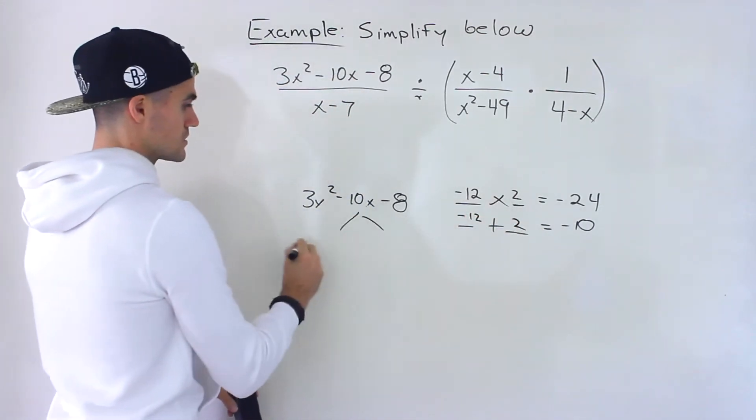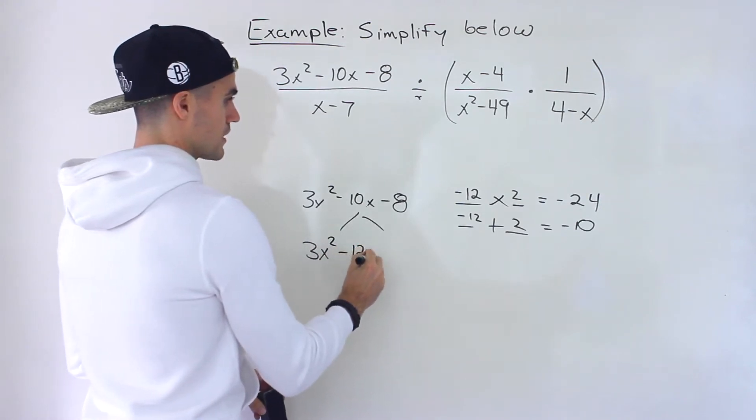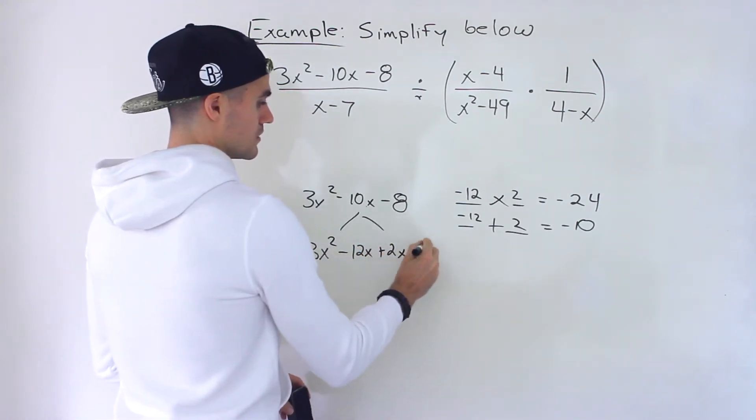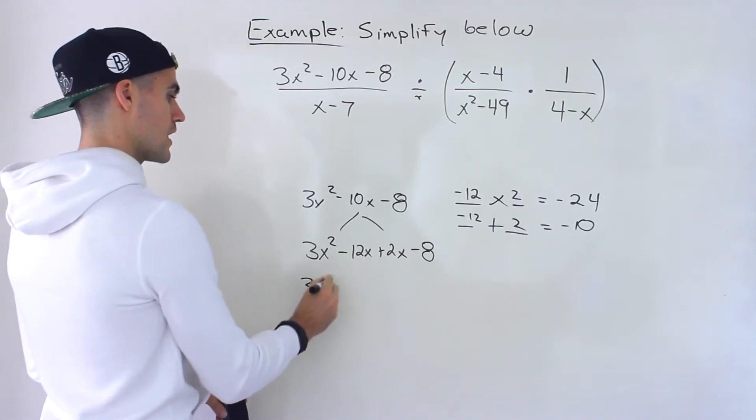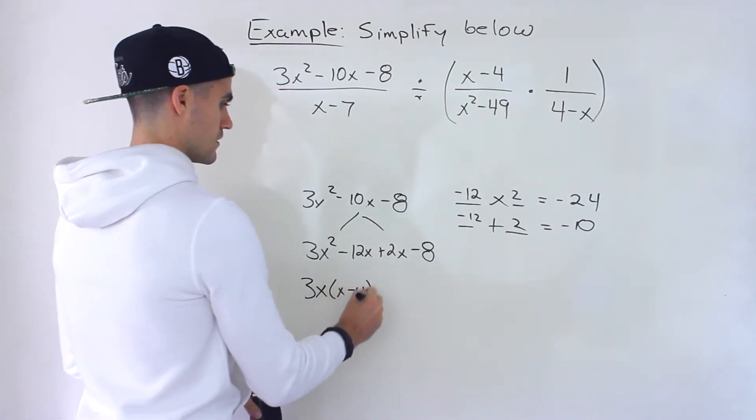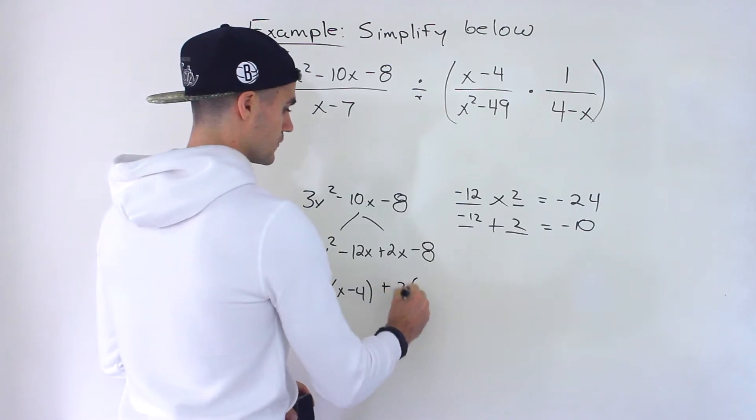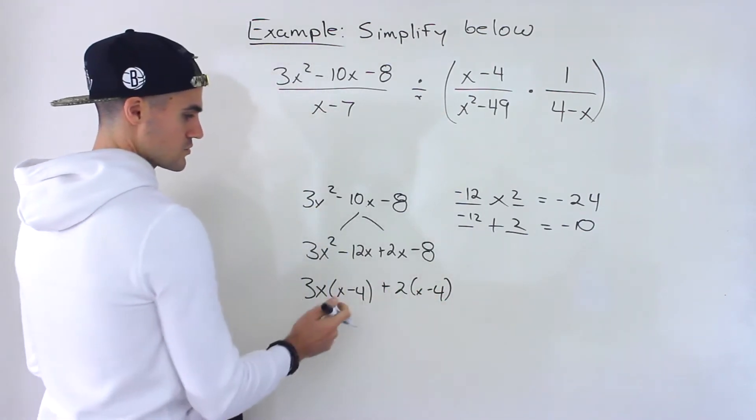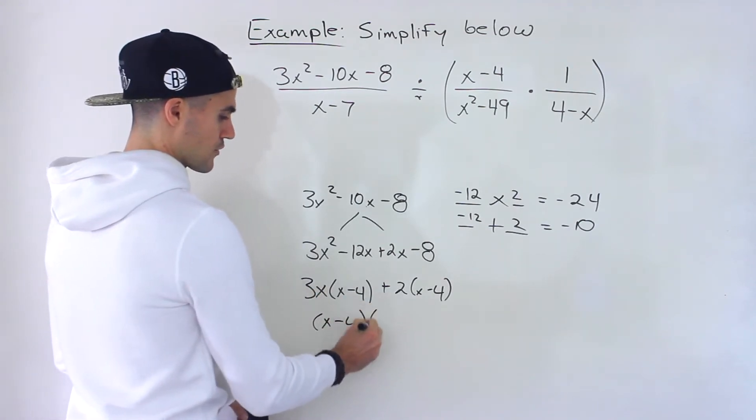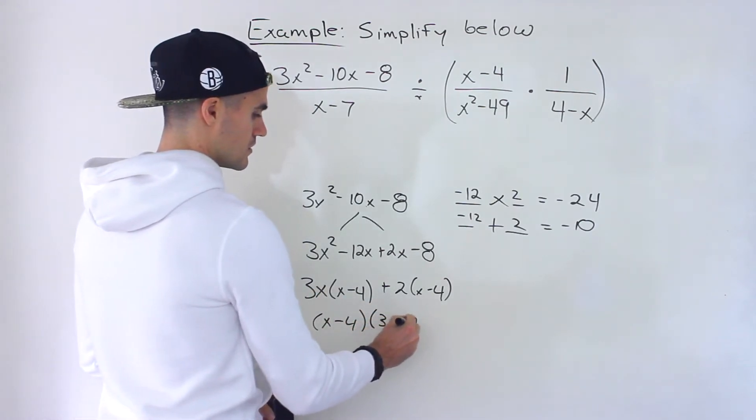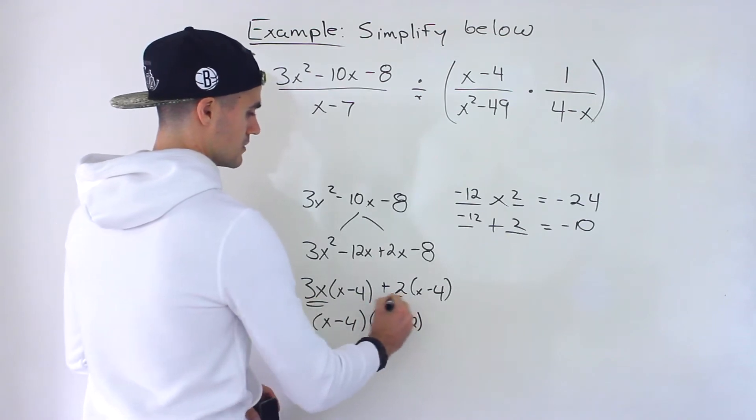So we can decompose this to 3x squared minus 12x plus 2x minus 8. From these two we could take out a 3x. From these two we could take out a 2. As usual these two brackets should be the same so we could take out that bracket and we'd be left with 3x plus 2.